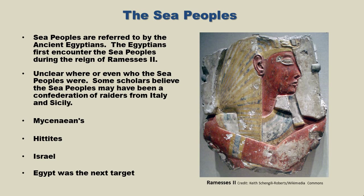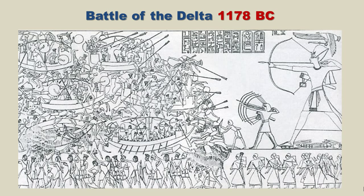Let's wrap up by talking about the Sea Peoples, mentioned in the last lecture as one of the potential causes for the Bronze Age collapse. We know about the Sea Peoples through the ancient Egyptians. It is unclear who or where exactly the Sea Peoples were — some scholars believe they may have been a confederation of raiders from Italy and Sicily. According to the ancient Egyptian chroniclers, the Sea Peoples wiped out several civilizations: the Mycenaeans, the Hittites, and Israel. The Egyptians wrote that 'no land could stand before their arms' — they were a wrecking ball, and Egypt was their next target. This culminated in the Battle of the Delta in 1178 BC, one of the last major battles of the Bronze Age and one of the few we can name and have a description of.